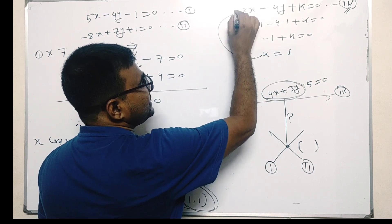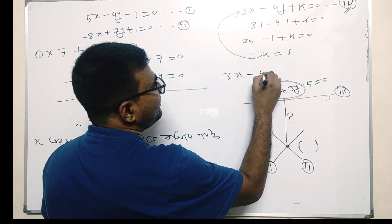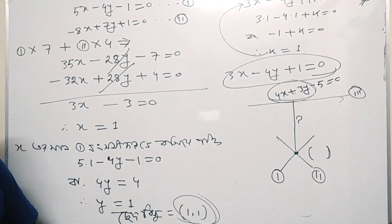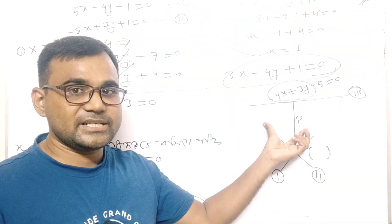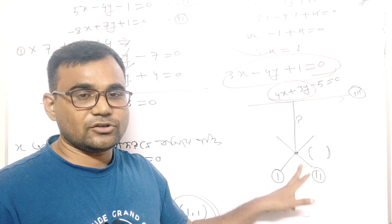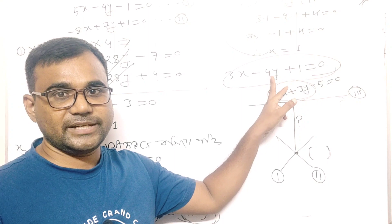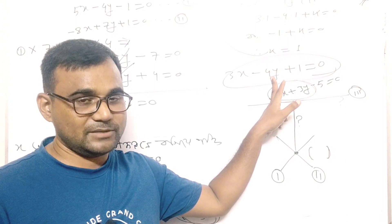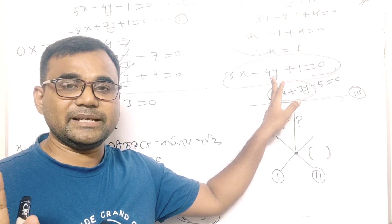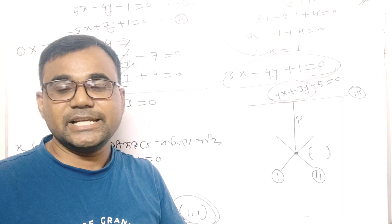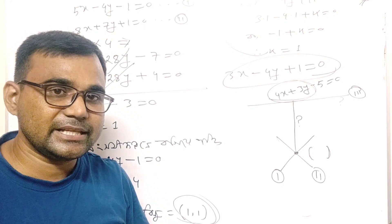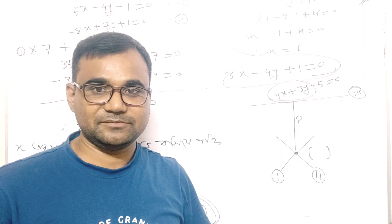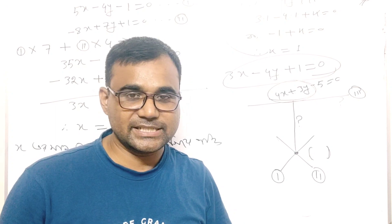With x = 1 substituted, we get minus 1 plus k = 0, so k = 1. Therefore the equation becomes 3x - 4y + 1 = 0. This is our required line — the equation of the perpendicular line. Any similar geometry problem can be solved by this method, step by step.